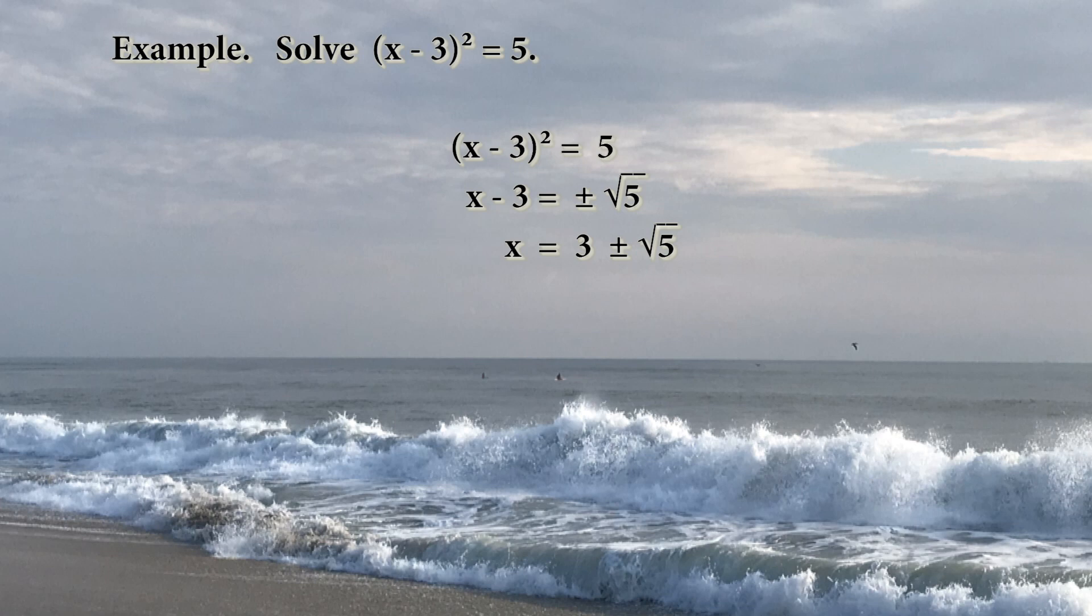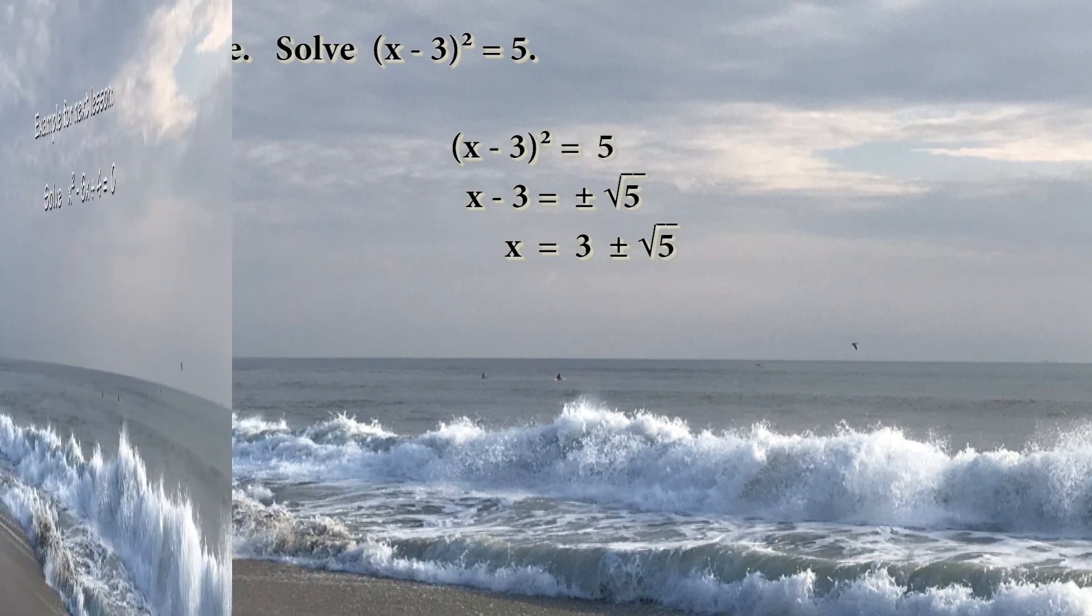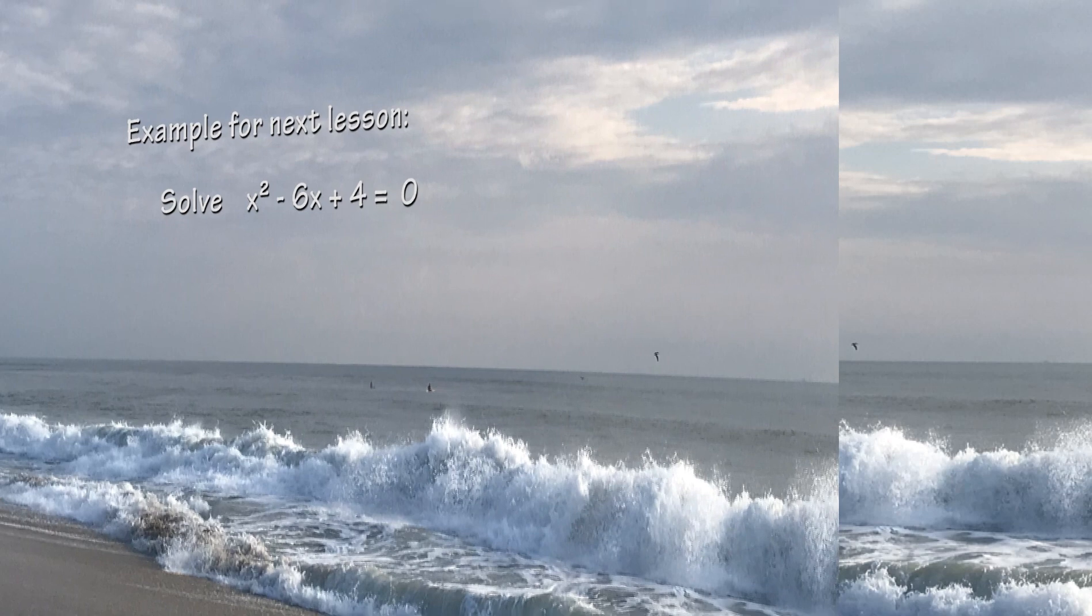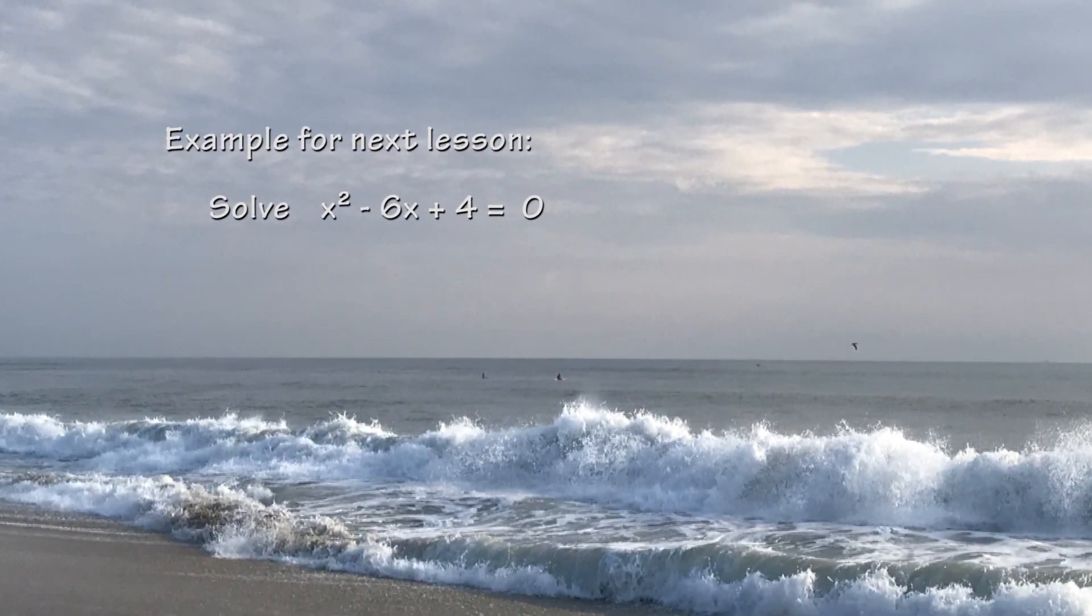There is a method to do this. It is called the method of completing the squares. In the next lesson, we will solve the equation x squared minus 6x plus 4 equals 0.